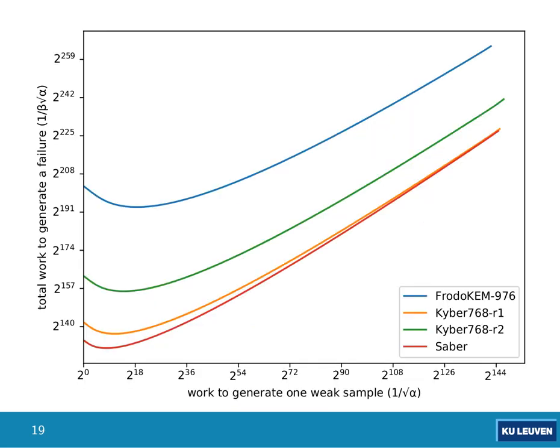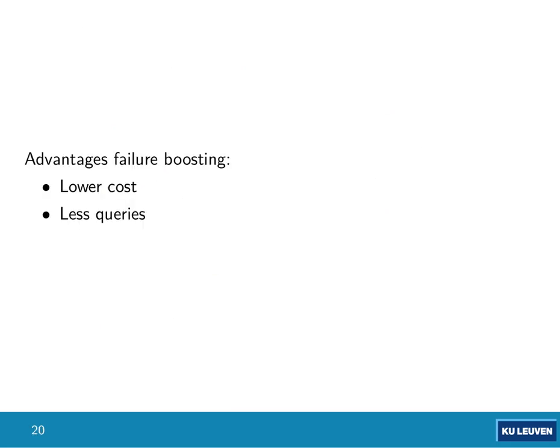The results are shown in a graph where the x-axis is the pre-computation work and the y-axis is the total work to generate a failure. On the complete left is random guessing with no pre-computation. Using a quantum computer with Grover search during pre-computation brings down the cost of finding a failure via this failure boosting procedure. The advantage is not only lower cost but also fewer queries: before the failure probability was delta requiring delta-inverse queries, now we've boosted it to beta — a higher number — so fewer queries are needed.